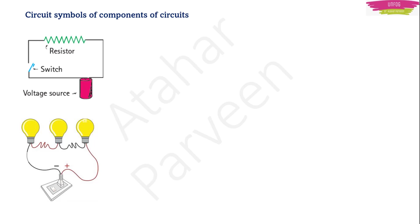Another useful function of the switch is safety. If you need to repair something, you first switch the circuit off and then touch the wires — you are safe. Otherwise you may get an electric shock. So the switch can also act as a safety device for any person repairing the circuit. This is one of the important uses of the switch.